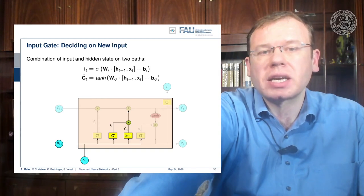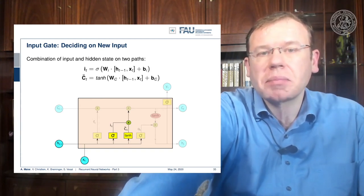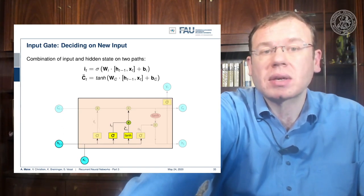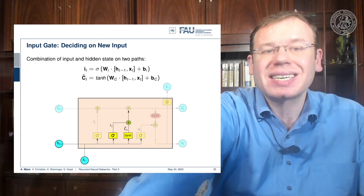Again, a matrix multiplication of the hidden state concatenated with the input plus some bias, and the sigmoid function as non-linearity. Remember this value is going to be between zero and one, so you could argue that IT is kind of selecting something.